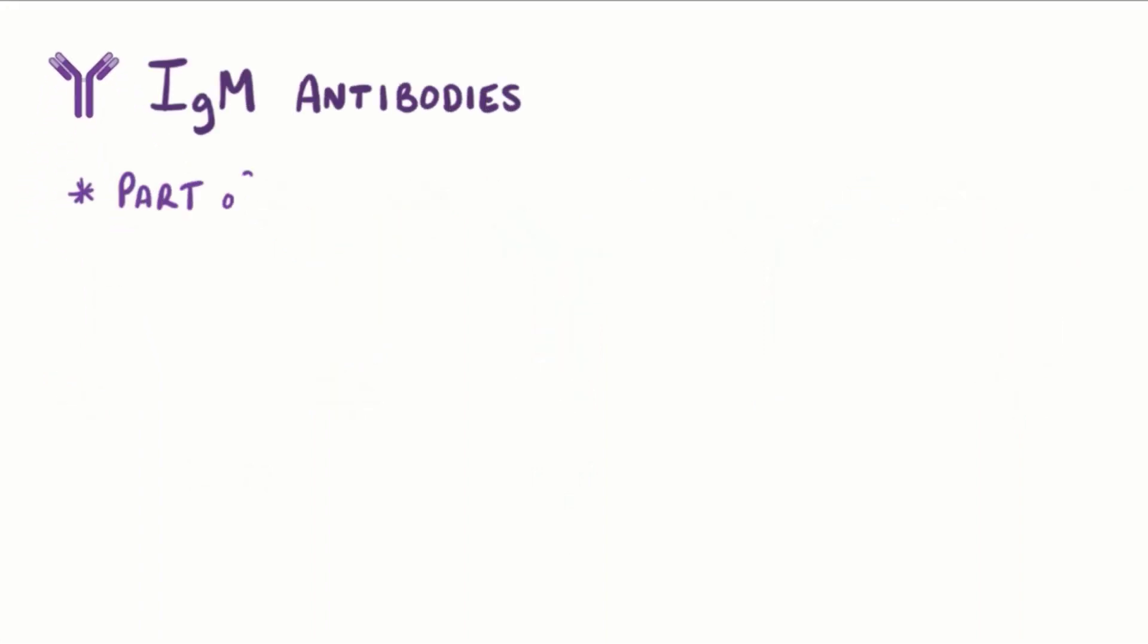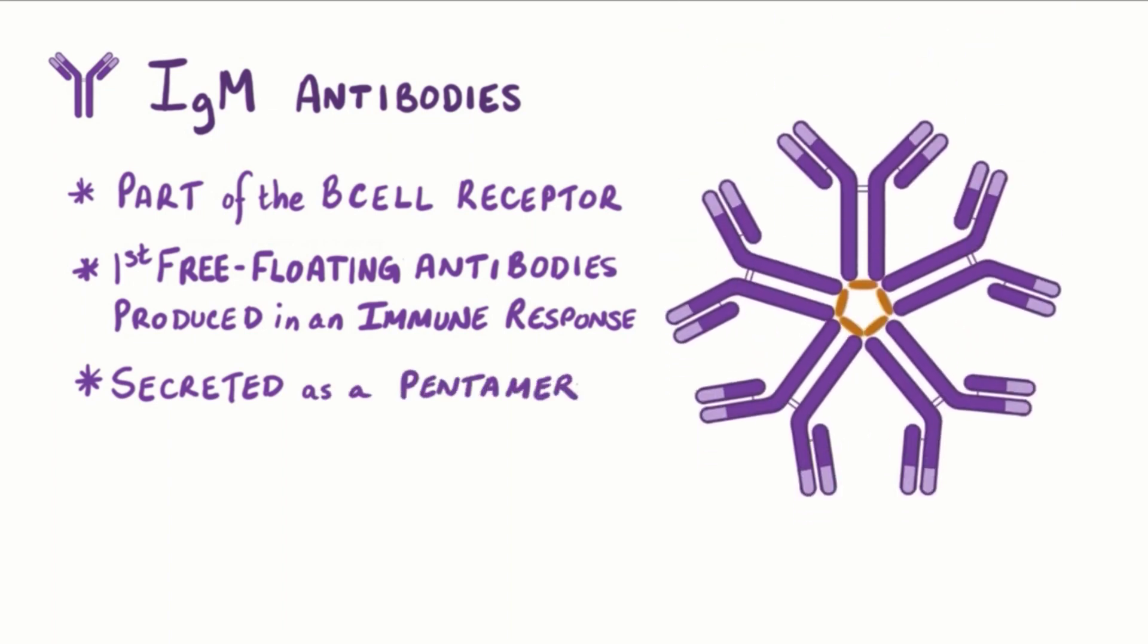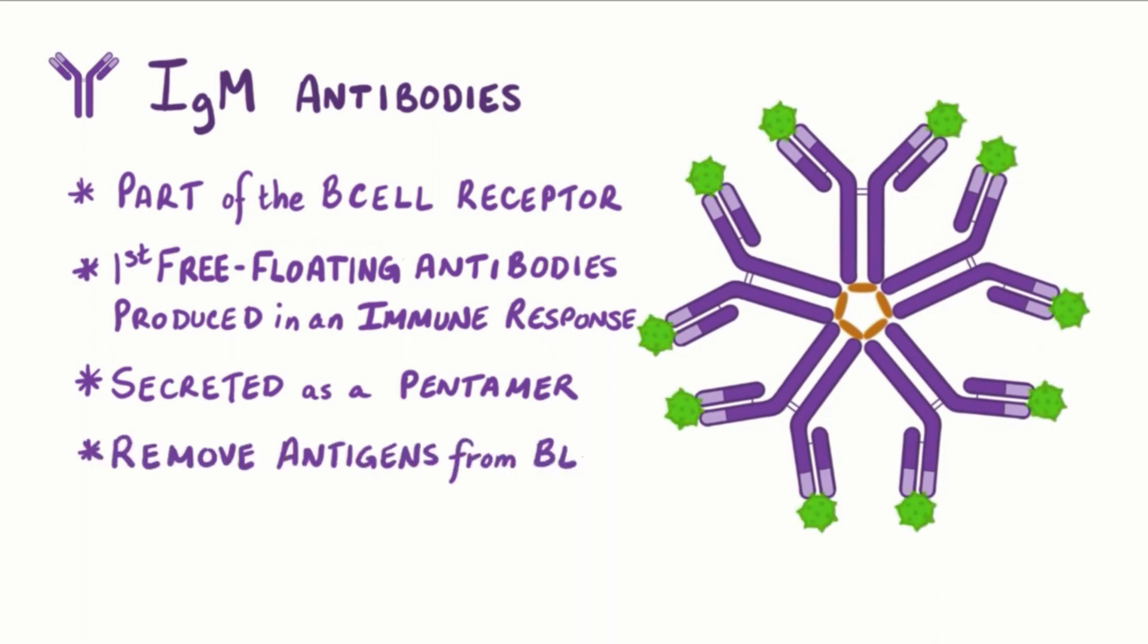For example, IgMs are part of B-cell receptors and are the first free-floating antibodies produced in an immune response. They're secreted as a pentamer, meaning there are five antibodies connected together, which provides a ton of binding sites for grabbing antigens and taking them out of the blood.